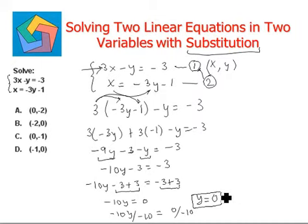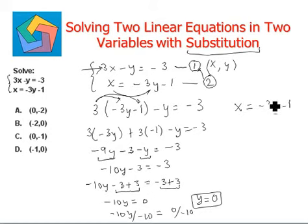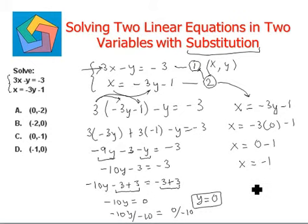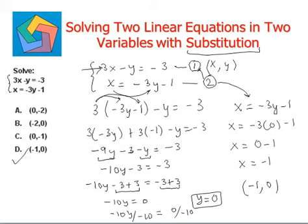Now we'll use y equals 0 in the second equation to find out the value of x. x equals negative 3y minus 1. We substitute y equals 0: x equals negative 3 times 0 minus 1. Negative 3 times 0 is 0, so x equals negative 1. The final answer is negative 1 comma 0, which can be seen in option D.